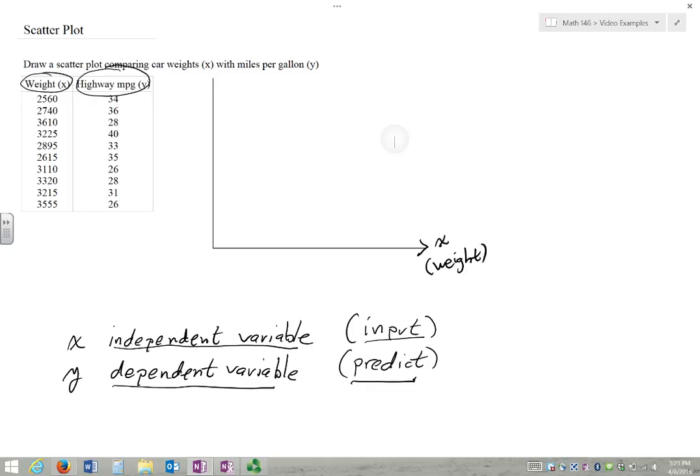And on the Y axis, I'm going to get miles per gallon. And this is actually from a data set. It's highway miles per gallon. The data set was given highway and city, so I just chose highway, thinking that might be a better predictor or a better indicator.